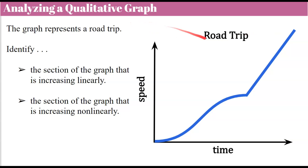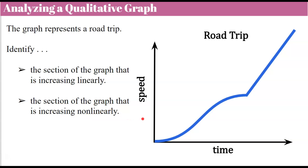Now we have a qualitative graph of a road trip. It's a qualitative graph because we don't have any intervals specified — there are no numbers. It shows the relationship between time and speed of our road trip. We're asked to identify the section that is increasing in a linear fashion and the section that is increasing in a nonlinear fashion. Go ahead and pause and see if you can identify those two sections.